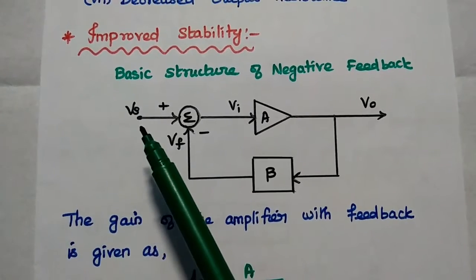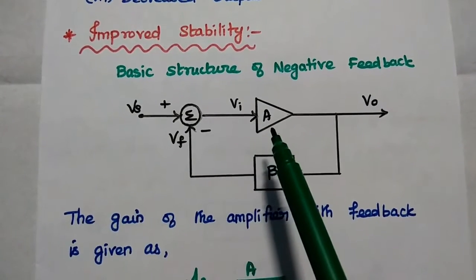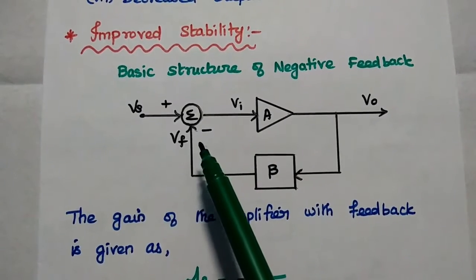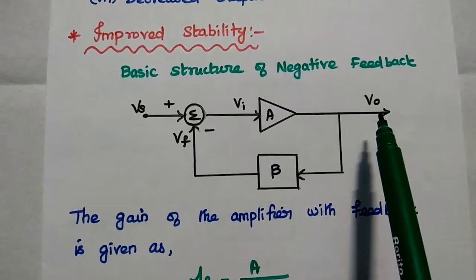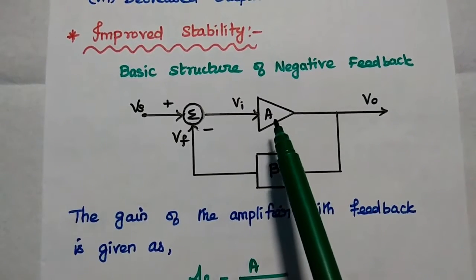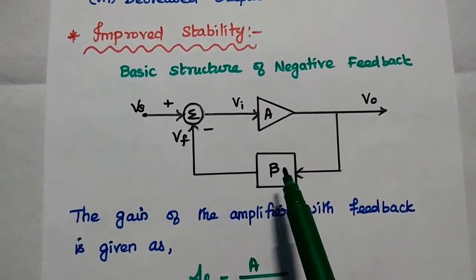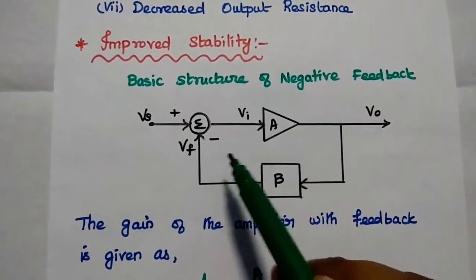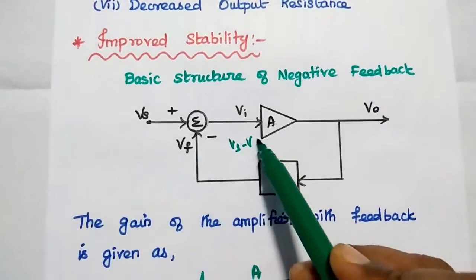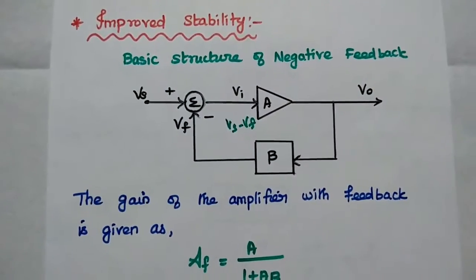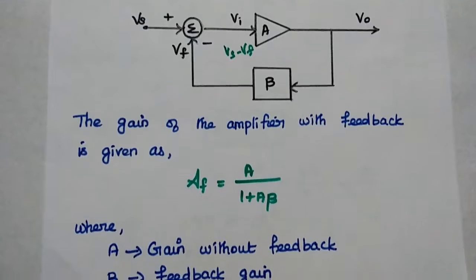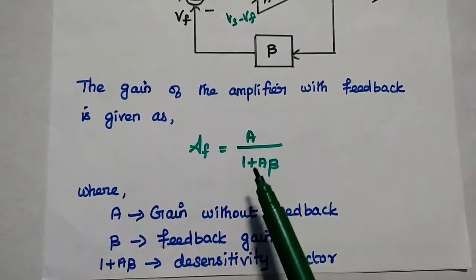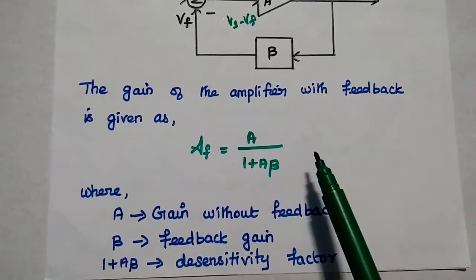Vs is the source input signal. Vi is the actual input to the amplifier. Vf is the feedback signal. V0 is the output signal. A is the gain of the amplifier. Beta is the feedback factor. Vi is equal to Vs minus Vf. The gain of the amplifier with feedback is given as Af equals A divided by 1 plus A·beta, for negative feedback.